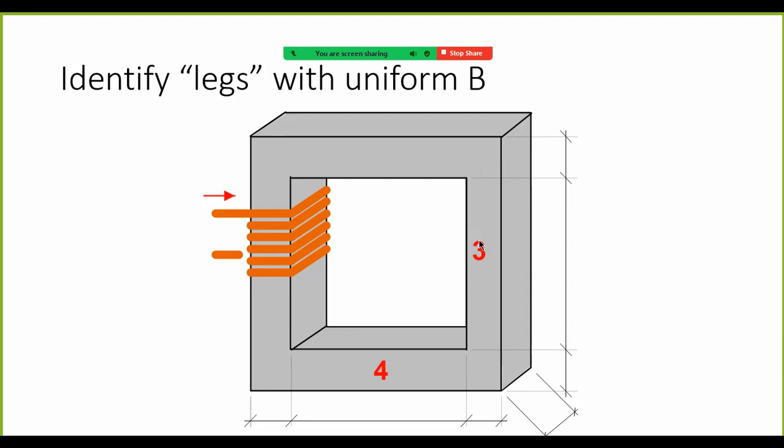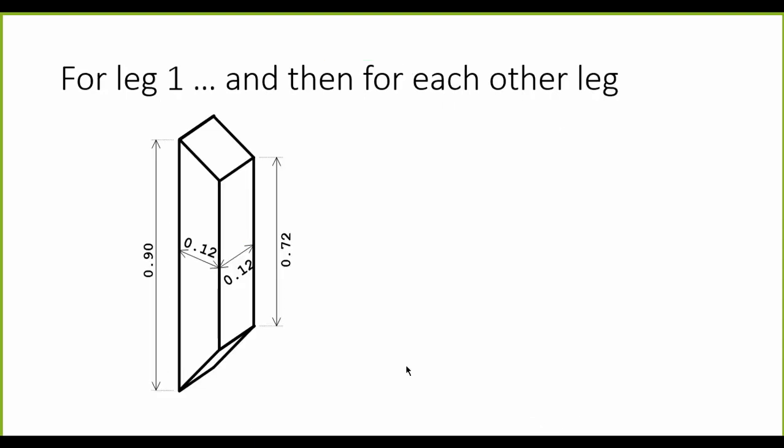Between this point and this point I will assume that the flux density is constant, and that is a segment I'm calling segment 3. Down here we have segment 4, segment 1, and segment 2. We identify the lengths of the circuit where we say B is uniform. For each one of them we will compute the reluctance.